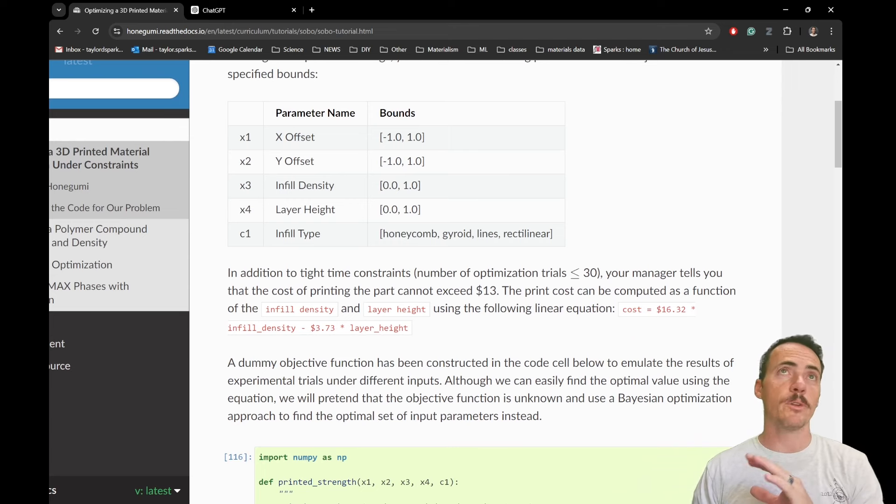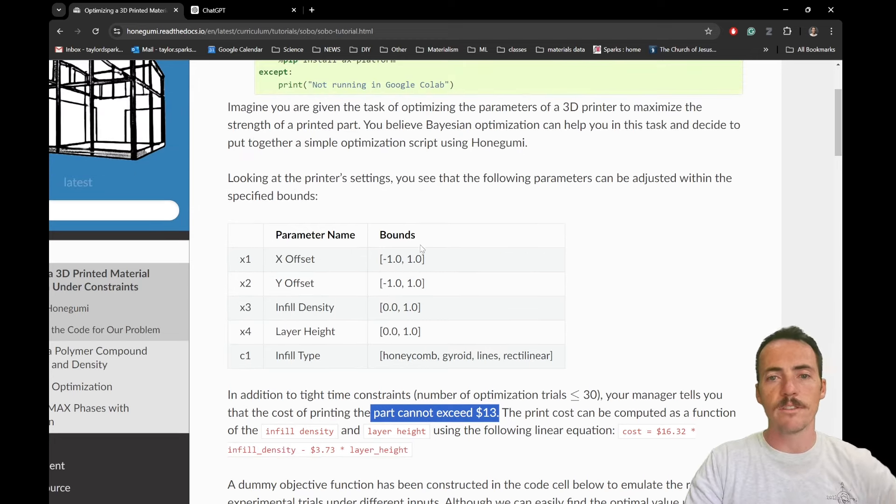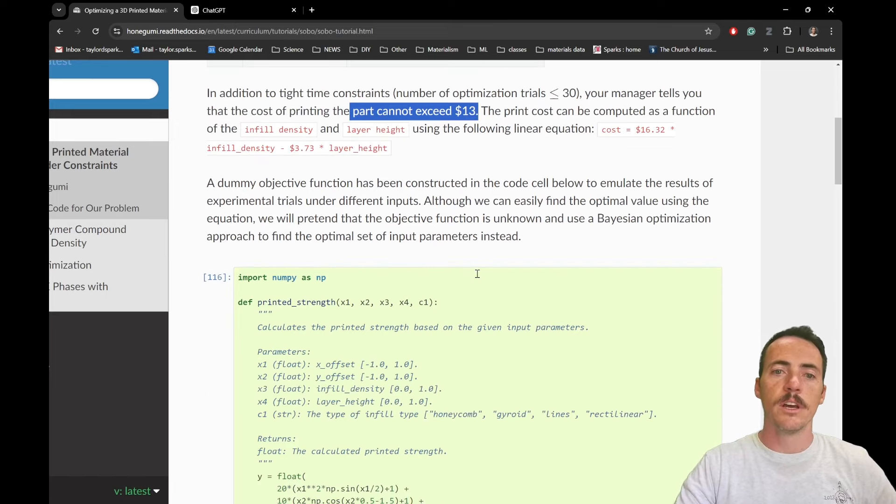But we're going to also introduce some constraints. First off, maybe we only have 30 trials. So you only have 30 tests that you can do, right? And your boss says that when you make this, you only want the part to be... Every time that you do a practice run, it can't cost more than $13. And you know from the provider of this instrument that there is an equation that describes the cost. It's based off of the infill density and the layer height. So for example, the cost is equal to this equation here, 16.32 times the infill density minus 3.73 times the layer height, right?